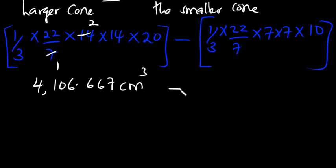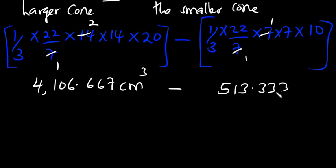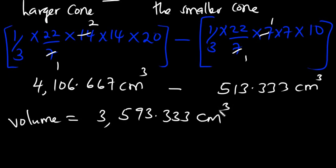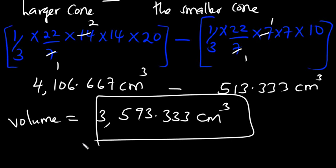For the smaller cone, simplifying similarly gives 513.333 cubic centimeters. To get the volume of the frustum, we subtract the two: 4,106.667 minus 513.333 equals 3,593.333 cubic centimeters. So that's the volume of the frustum.